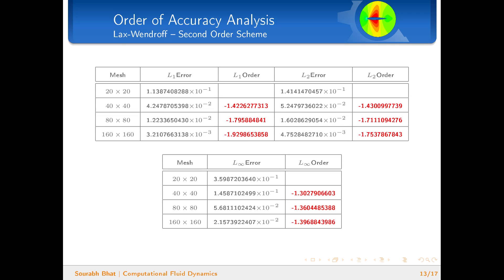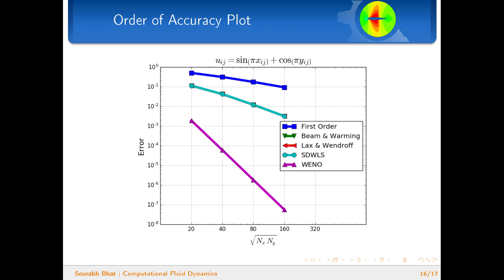The second order schemes—Beam and Warming, Lax-Wendroff, and STWLS—all produce very similar results like the ones we have seen earlier. The WENO scheme produces an order of five as expected, and here are the plots for the order of accuracy.